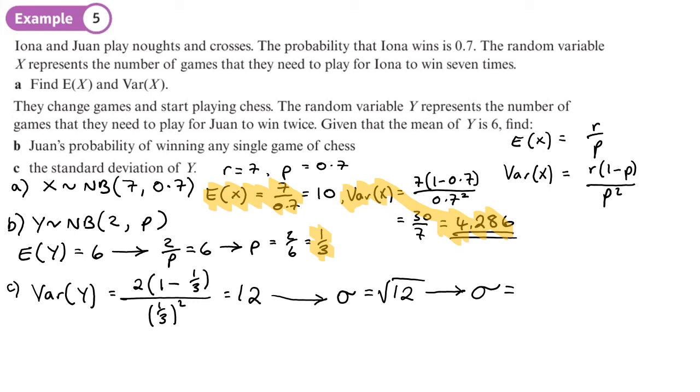Now these last answers, you know, I would go from maybe three significant figures - they'll be happy with that on the mark scheme. So 4.29, be happy with that, three significant figures. Or 3.46, again, three significant figures will be fine.